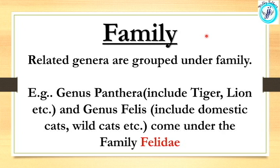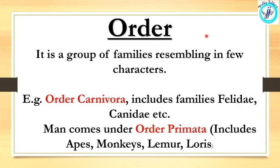Now we are talking about order. For example, the family Felidae belongs to an order. There are categories like Felidae and Canidae — dogs belong to Canidae. Canidae and Felidae are closely connected because both are flesh-eaters. Families Felidae and Canidae come together under the order Carnivora.